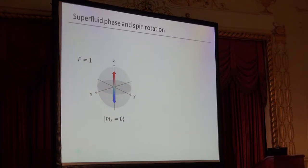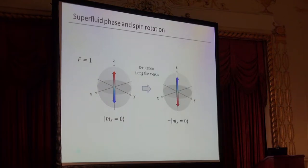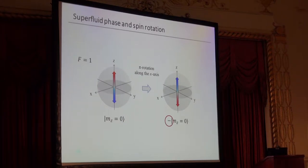Another interesting example is the |1, 0⟩ spin state. Let's make a flip along the x direction. Again you have a |1, 0⟩ spin state, but with a minus-1 factor. This minus-1 factor corresponds to a π phase shift for the superfluid phase. From these two examples you can immediately see that spin rotation can affect the superfluid phase, and consequently, superfluid dynamics can be affected by spin rotation.